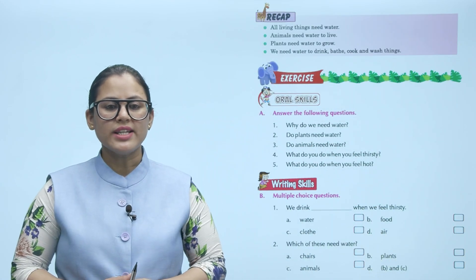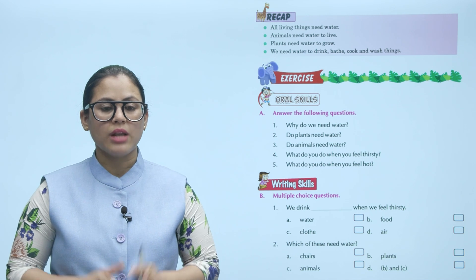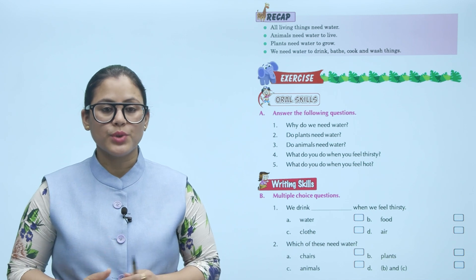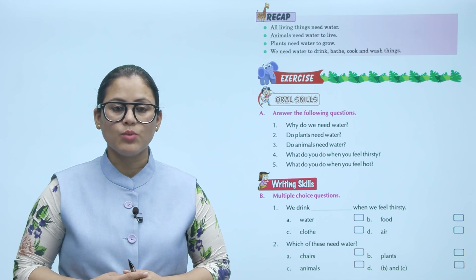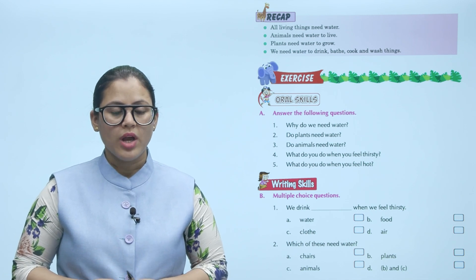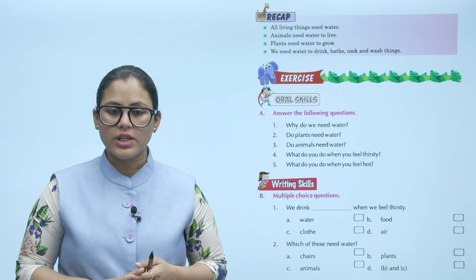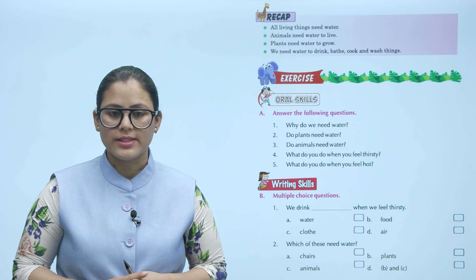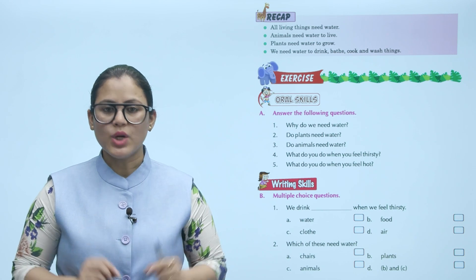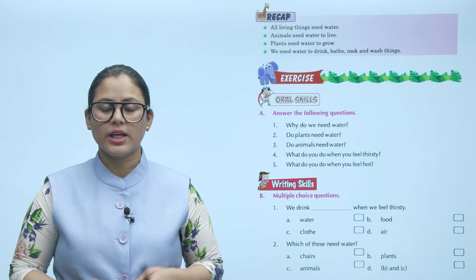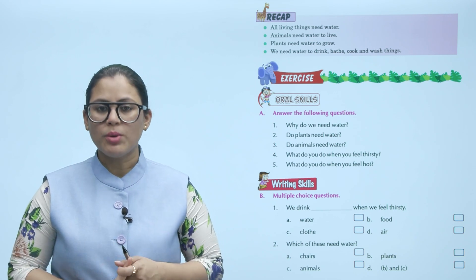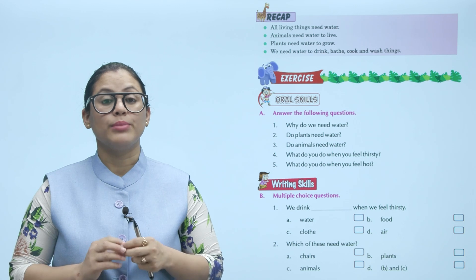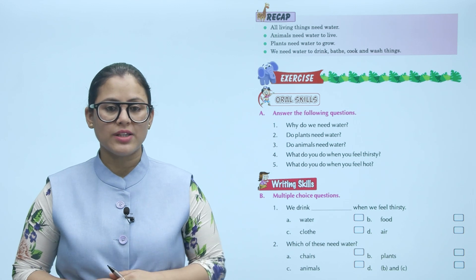Recap: All living things need water. Animals need water to live, plants need water to grow. We need water to drink, bathe, cook, and wash things. Hum subhi ko paani ki zaroorat hai. Animals ko bhi paani ki zaroorat hai. Plants ko bhi paani ki zaroorat hai.